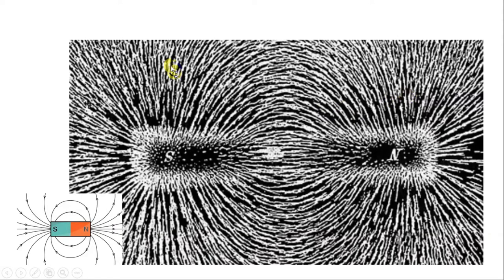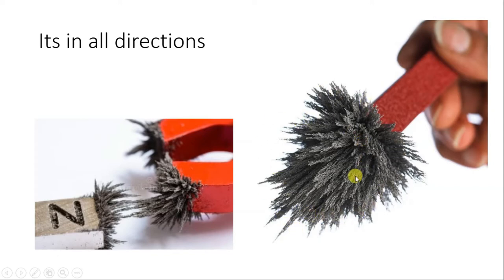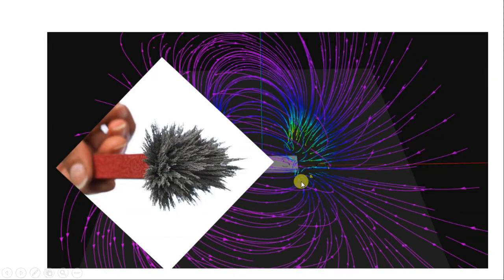The strength of the magnetic field may change as we go away from the poles. The magnetic field is not just in two dimensions — it is all around the magnet in all directions. If you do this experiment at home with iron filings, you will better understand it. The magnetic field is around the entire volume of a magnet, and here you can see the 3D representation of the field with lines in all directions as indicated by the iron filings.